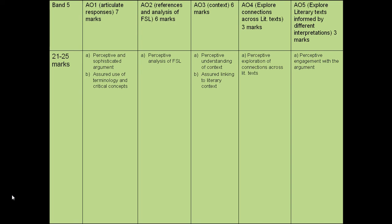AO3 is your inclusion of context. Remember, to get six marks you could be looking at social, literary, or historical context. You can also look at the context of the extract itself — so what is happening in the text at that point is also really important. AO4 is your ability to connect ideas across literary texts — perceptive explanation across those texts is what you need to be doing here.